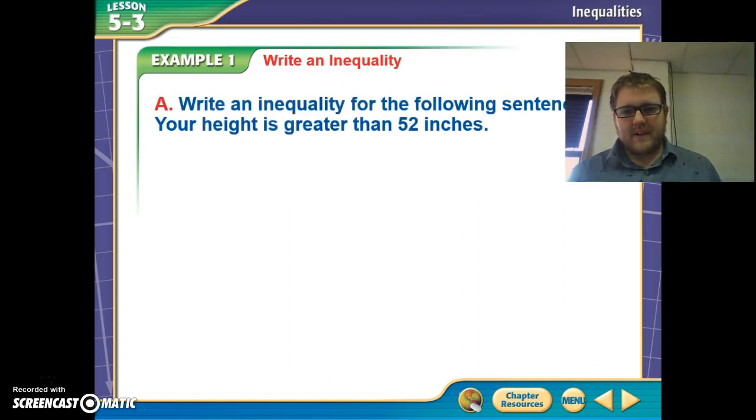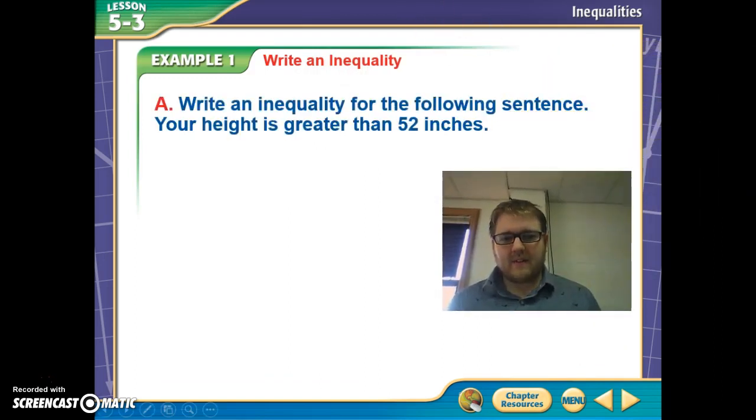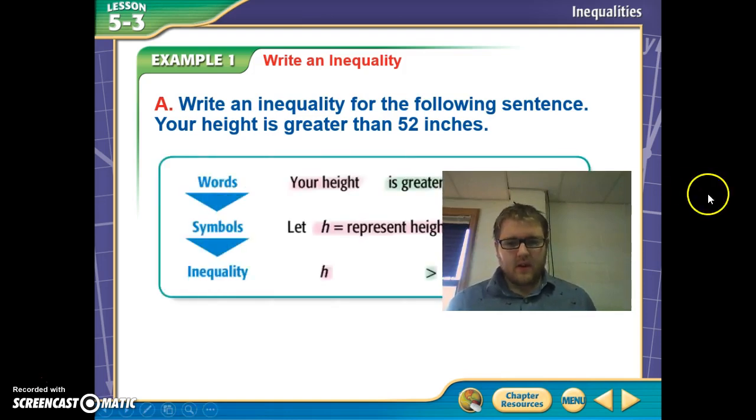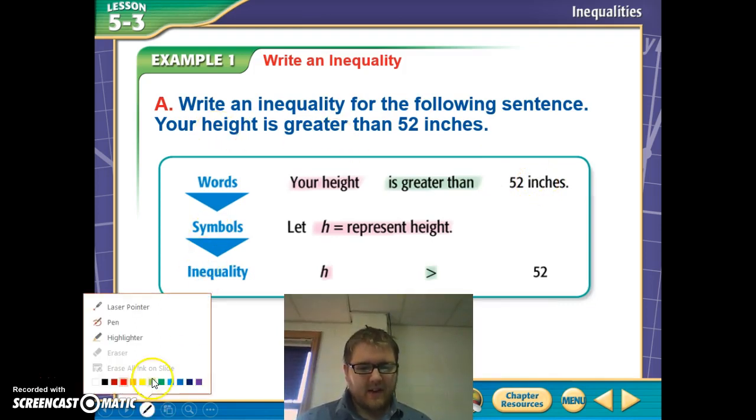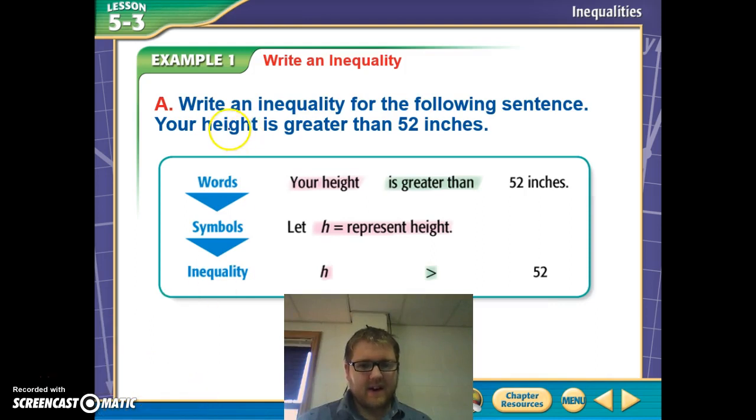Our first example here: write an inequality for the following sentence. Your height is greater than 52 inches. So, as you can see, if we call h your height, that's labeled in red here, we call the greater than symbol green, and 52 inches. Those are kind of the three parts that we want to look at. We want to look at the two things we're comparing. We're comparing your height, and we're comparing that to 52 inches.